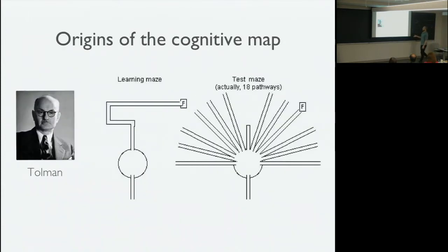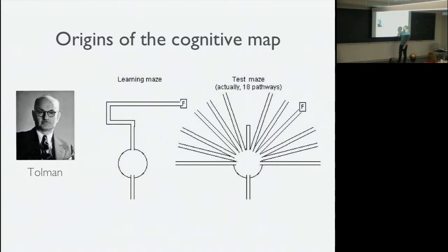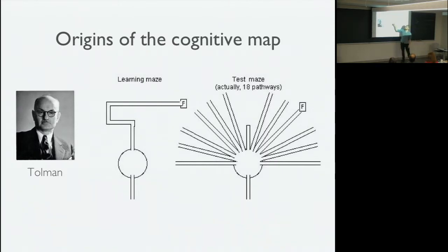The idea of a cognitive map goes back to Tolman. He did these very creative experiments, such as the following: you put a rat in a maze where it follows some convoluted path to food. Then you could put it back at the same starting point, but replace the convoluted path with a radial arm maze. Amazingly, the rat knows to go along the shortest Euclidean path to the food source.